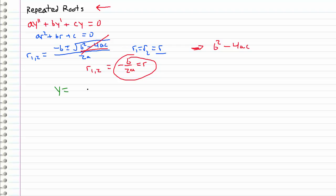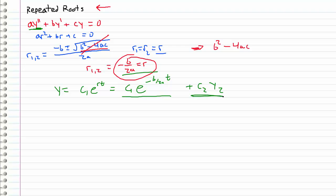What we're left with is a solution that looks like c1·e^(rt), which substituting in the root gives c1·e^(−b/2a · t). Although we have a second order differential equation, we only have a single solution, and that does not form a fundamental set. So we need another solution — one that is linearly independent from this one.